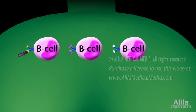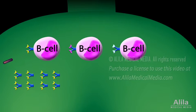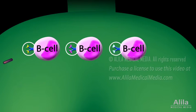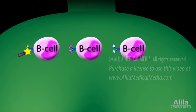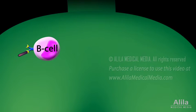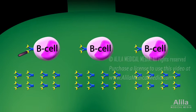Only cells that can bind to the pathogen can be activated to produce antibodies. B cell surface receptors, BCRs, are actually membrane-bound antibodies. The existence of BCR variations means that the body already has all the antibodies it can possibly make right from the start. For resource management purposes, it makes sense not to produce all of them in large quantities. Instead, the presence of an invading pathogen selectively activates the binding B cell, which then multiplies and produces huge amounts of that particular antibody to combat the pathogen.